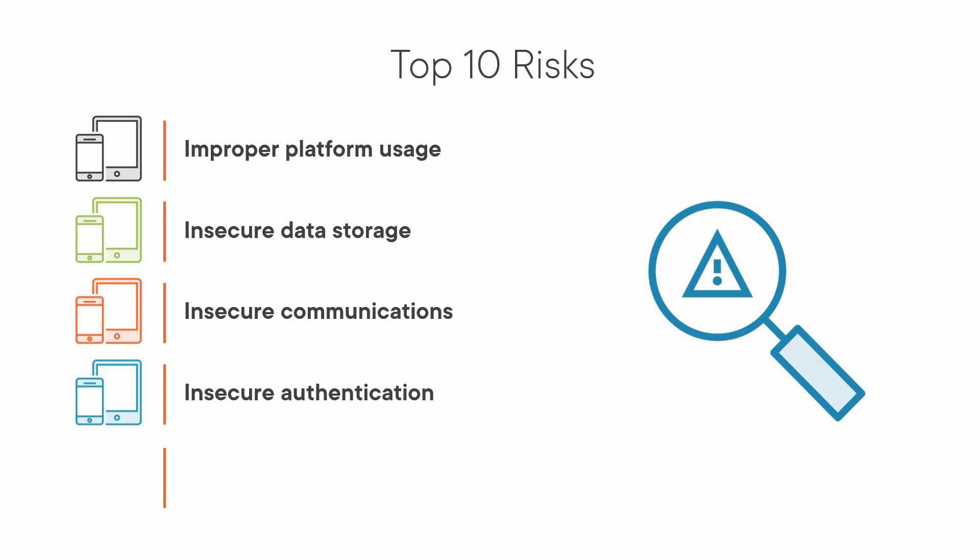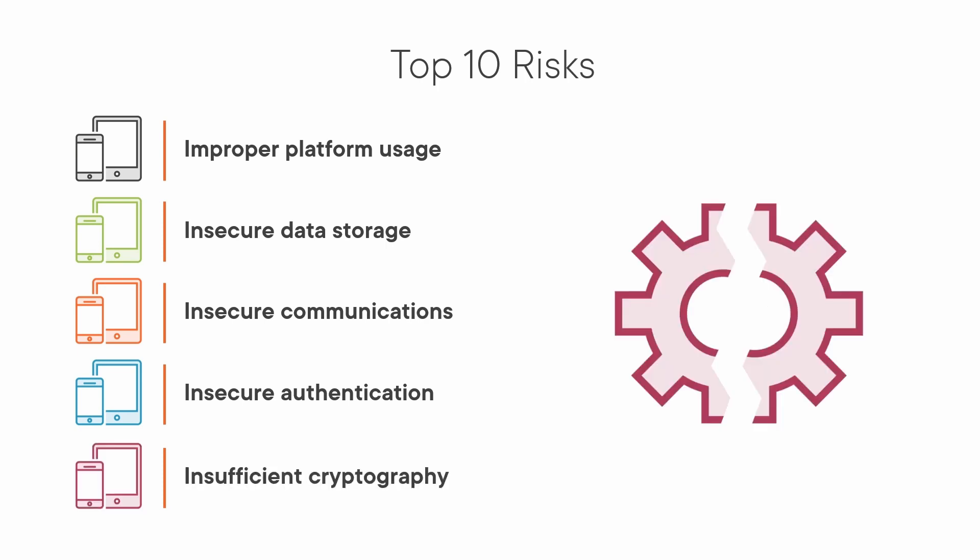We then have M5: Insufficient Cryptography. Mobile apps should always use standard cryptographic algorithms and implementations. Using weak cryptography increases the risk of data breaches, whether it's intended or not.